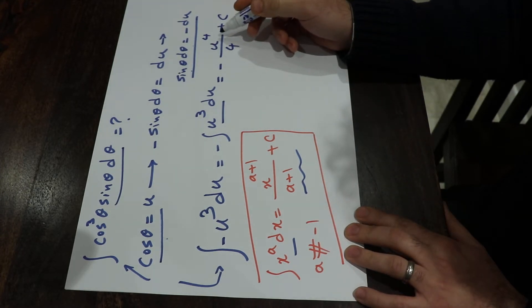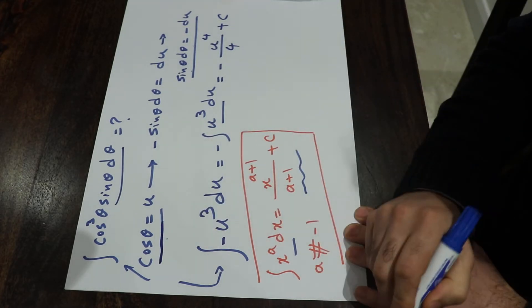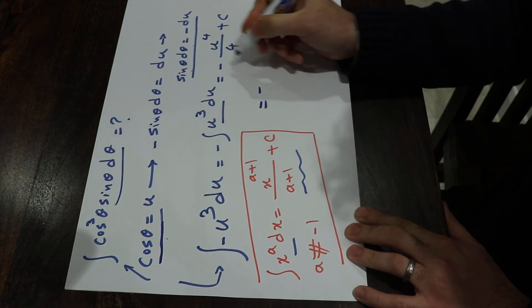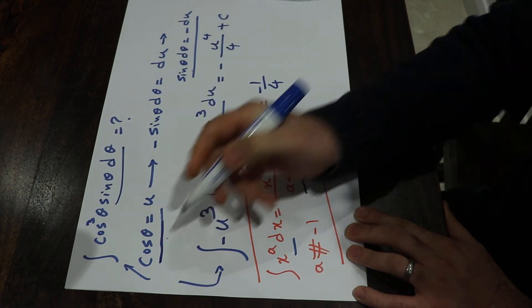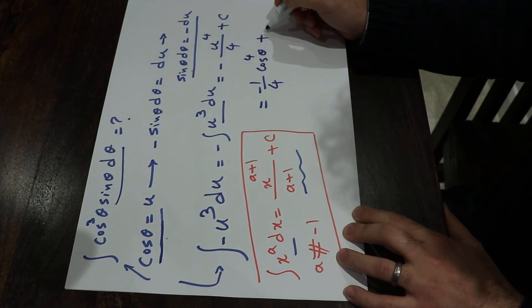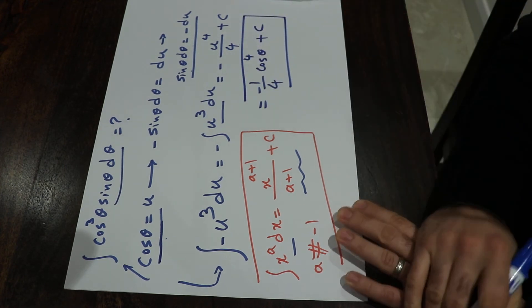All you need to do here is to substitute the u with the original function you use at the beginning, which will be equal to minus 1 divided by 4, or instead of u, I put cosine theta, cosine theta with the power of 4 plus c. And that is the solution to the integral.